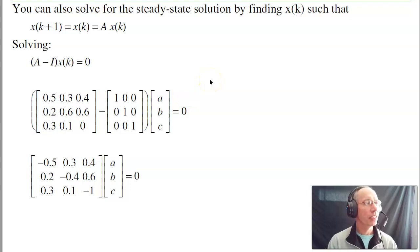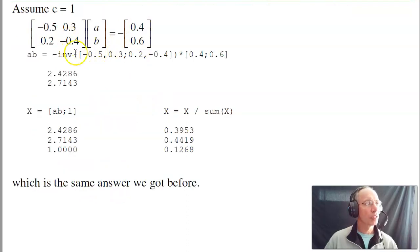A second way to solve is using matrix algebra. In steady state, by definition, X of k plus one equals X of k. That's also A times X of k. Solve for X. Bring the X to the right. I have A minus I times X of k equals zero. Either X of k is zero, which is the trivial solution, or A minus I is zero. Let C equal one, then solve for A and B. Those aren't a valid probability. They don't sum to one. Scale them so they do sum to one. That's the steady state solution.